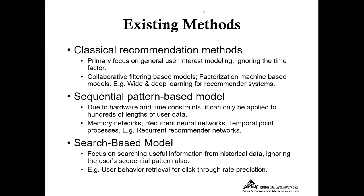The third category is based on search models, which focus on searching useful information from historical data, but also ignore the user's sequential patterns. An example paper is user behavior retrieval for click-through-rate prediction.